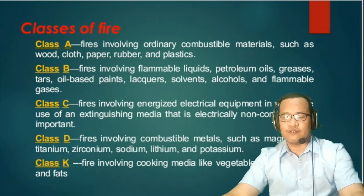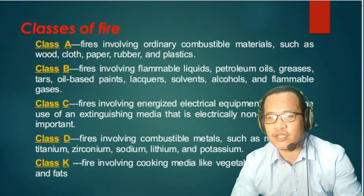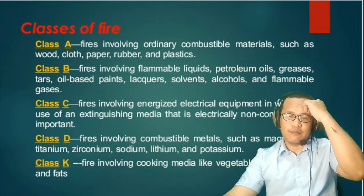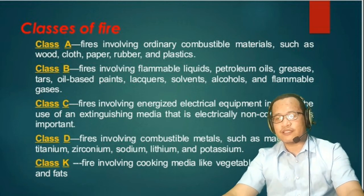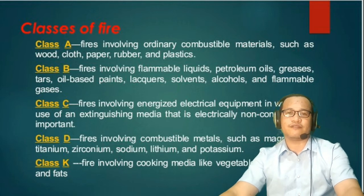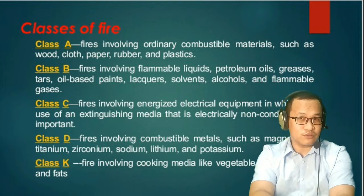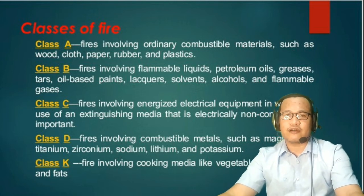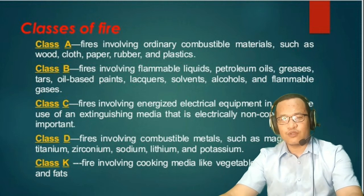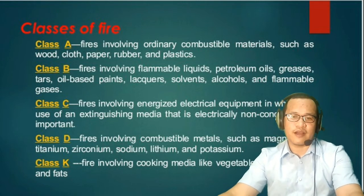Class A fires involve ordinary combustible materials such as wood, cloth, paper, rubber, and plastic. All of these are actually present inside an aircraft, especially inside the aircraft cabin. A passenger may carry a piece of paper, wood, or rubber, and clothing may also be present inside the aircraft cargo or luggage compartment. If the fire is started because of these combustible materials, it is considered a Class A fire.